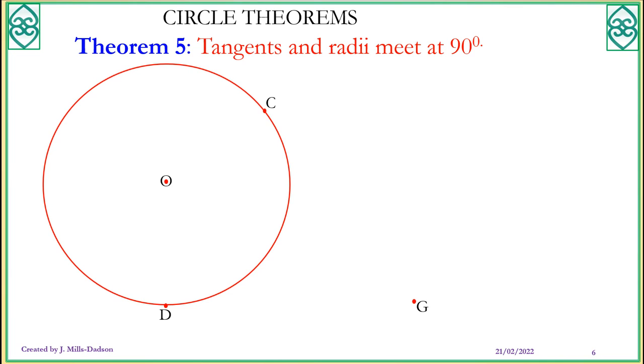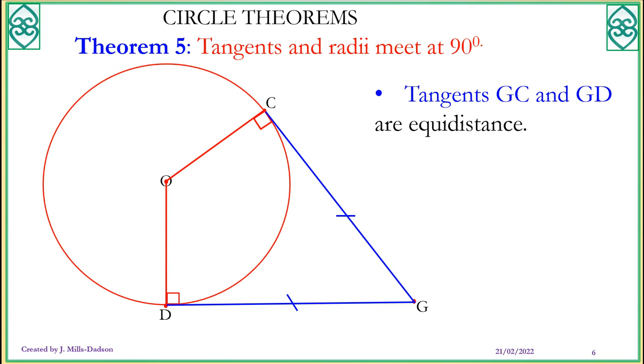Theorem 5: Tangents and radii meet at 90 degrees. So whenever you have a tangent and a radius, they always form 90 degrees. Simple as that. But one feature that I want to point out clearly to you now is that when you have tangent from one particular point outside the circle, the two tangents are equidistant or for that matter, congruent. The length of the two must always be equal. That makes the triangle GCD isosceles. We'll be coming to questions like this later on during this lesson.